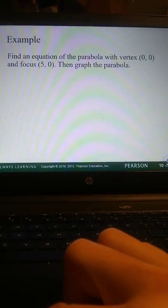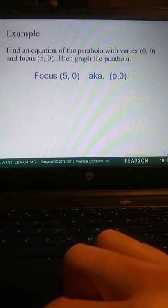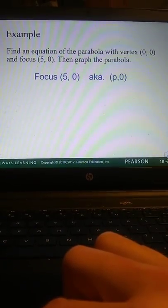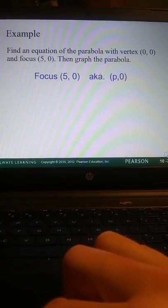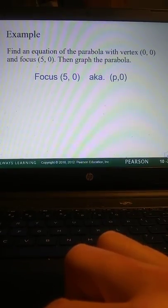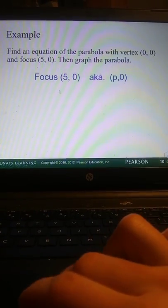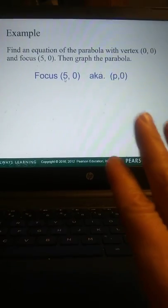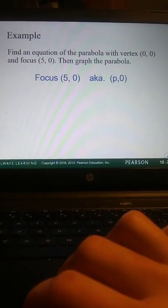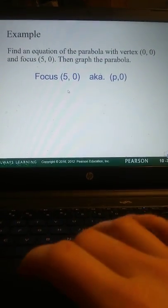So here we're going to work backwards. We have a focus of 5, 0, a vertex of 0, 0. So what are we going to do? That tells us that the focus, because the X value is 5, we know that it is going to... Or actually, no, this will be the opposite. If the vertex value... Sorry. I'm trying to talk fast before the kids start making noise.